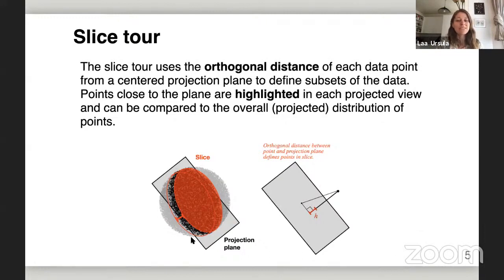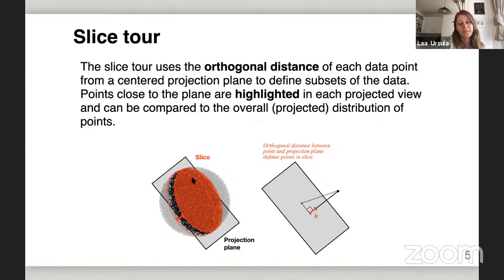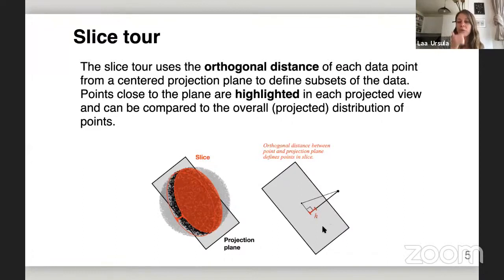There's a diagram here to illustrate this. On the left we have points inside a sphere, and at a certain angle we have a projection plane passing through. For each point in the sphere, I check how far it is orthogonally from the projection plane. I'm highlighting everything within a certain distance from the plane — this is H, the slice radius — and everything else gets grayed out. So I can compare the points captured in the slice to everything else in the projection.